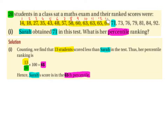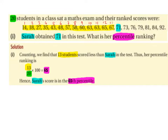13 students scored less than 71. And remember, there were 20 students in the class altogether who sat the test. Thus, her percentile ranking is 13 over 20, multiplied by 100, which is 65. Hence, Sarah's score is in the 65th percentile.